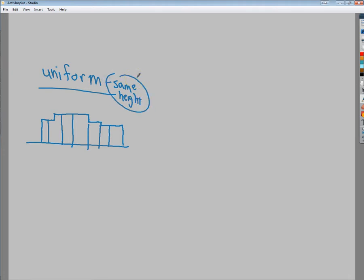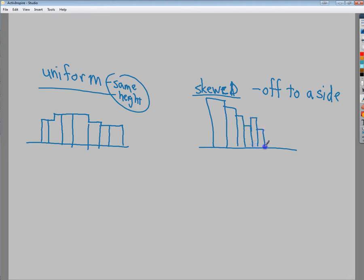The next type would be skewed. Skewed histograms would be off to one side. I have a whole bunch of stuff up here. But as it goes, it tends to sort of move out. I'll even have a little buffer there, but still for the most part a lot of it's over here.